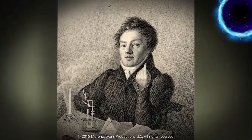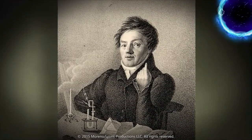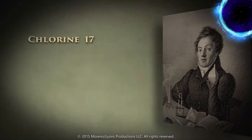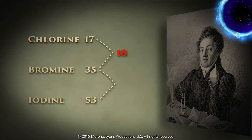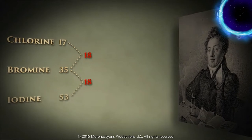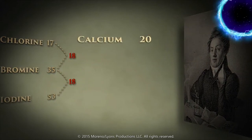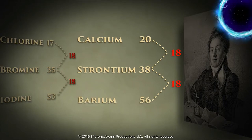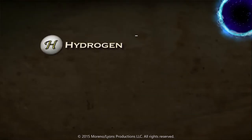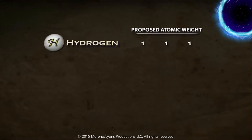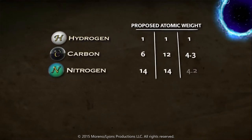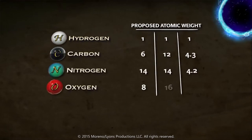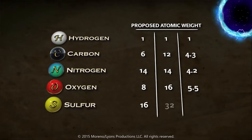Döbereiner found another triad among the family of elements called the halogens — chlorine, bromine, and iodine — and a third among the alkaline earth metals: calcium, strontium, and barium. Döbereiner's triads were a tantalizing clue. But for decades after, no one could order all the elements because there were so many competing systems of atomic weights.